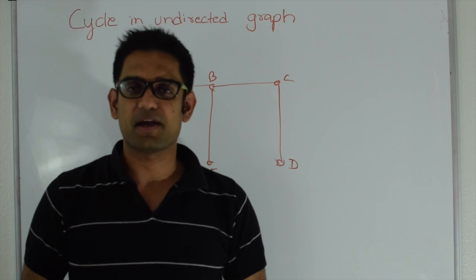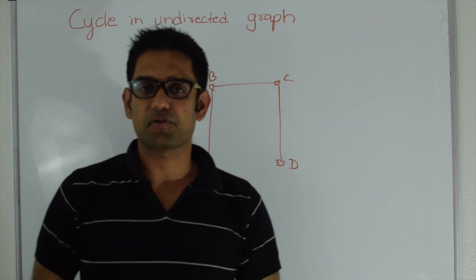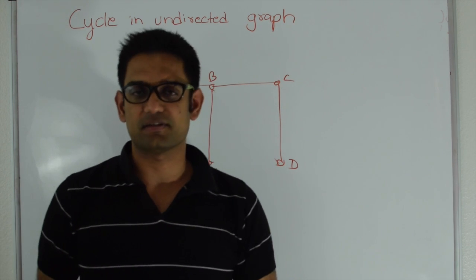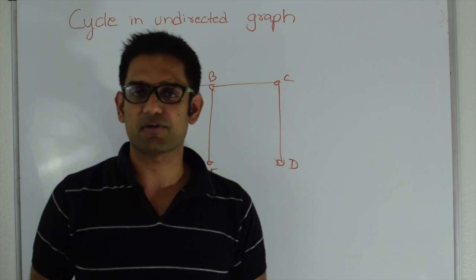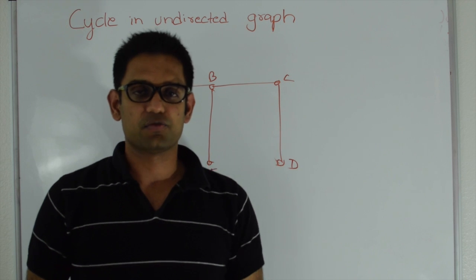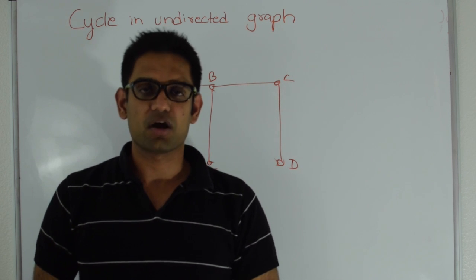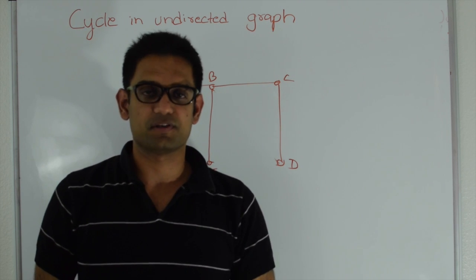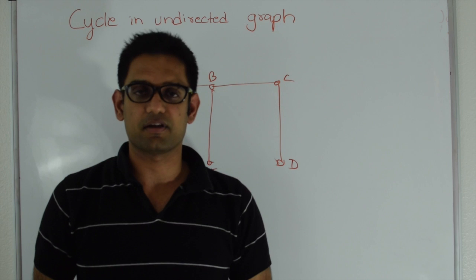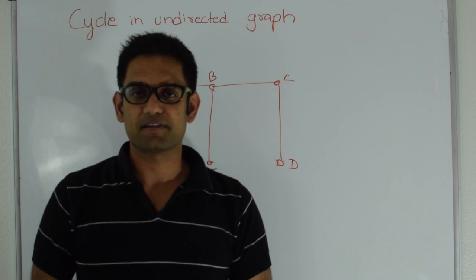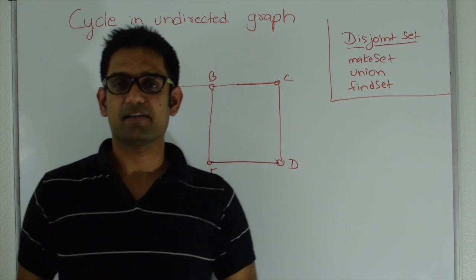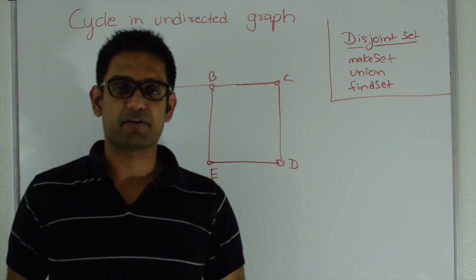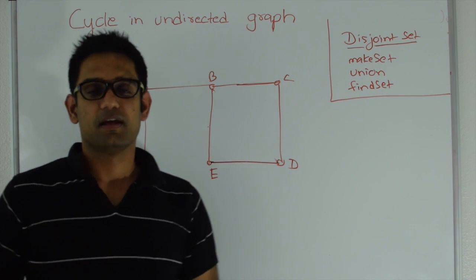There are many ways to find a cycle in an undirected graph, like using disjoint sets, using DFS, using topological sort, and a few other ways. In today's video I'm going to talk about a couple of these techniques — one is using disjoint sets, another is using DFS to find a cycle in an undirected graph. Let's first talk about how to find a cycle using disjoint sets.